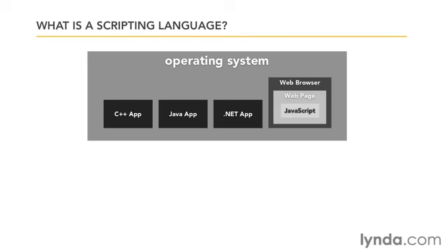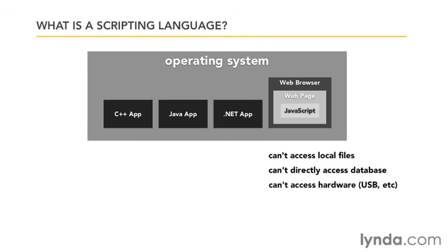Another way JavaScript is limited is that it doesn't have access to the file system of the computer it's running on. There are no words in JavaScript to open or save local files, because that would be a security risk. There are no words in JavaScript to talk to a database or target a USB port. That strikes some software developers as odd, because most languages are all about input and output, and JavaScript isn't. But they're missing the point — JavaScript wasn't designed as a general purpose programming language. It was designed to manipulate web pages, and it does that very well.